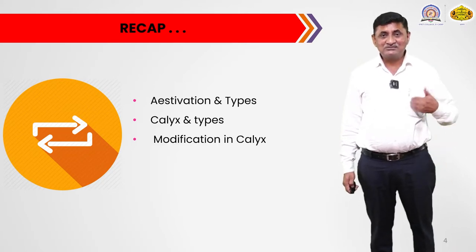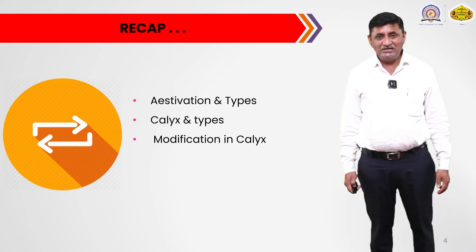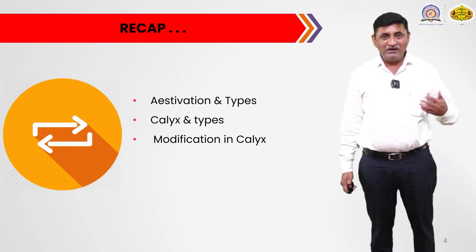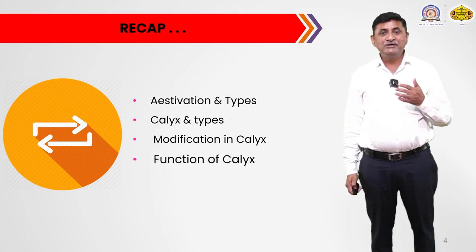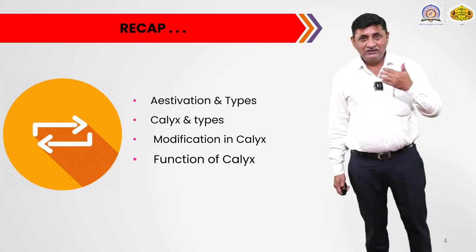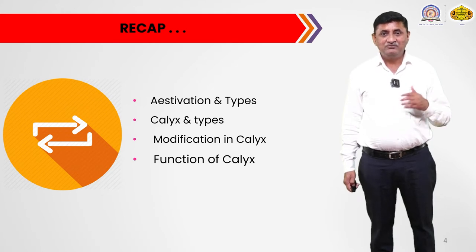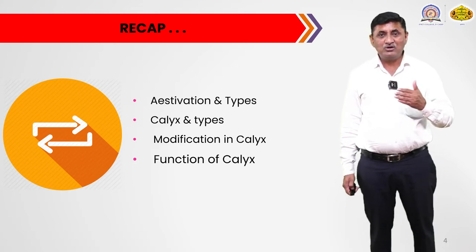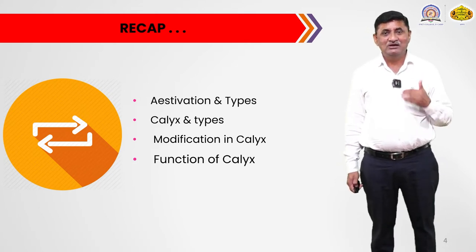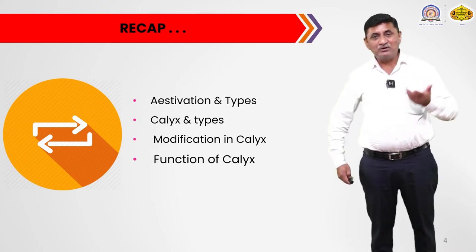We also learned the modifications observed in the calyx. The modifications are like pappus calyx, petaloid calyx, spurred calyx, and spinous calyx. We also came to know what are the main functions of calyx — giving protection to the inner floral whorls, because the calyx is the outermost whorl of a flower. So this is a recap of our previous video.